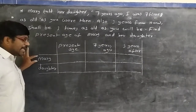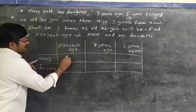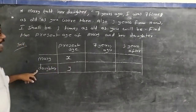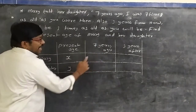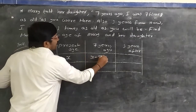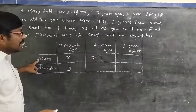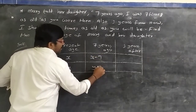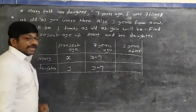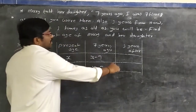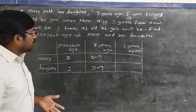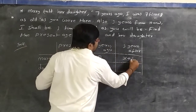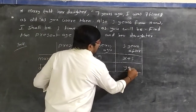Let the present age of Mary = x and the present age of her daughter = y. Seven years ago, Mary's age was x − 7 and her daughter's age was y − 7. Three years from now, Mary's age will be x + 3 and her daughter's age will be y + 3.